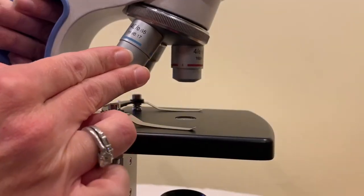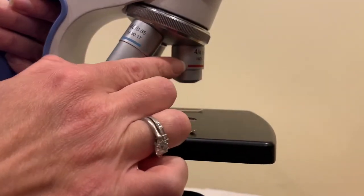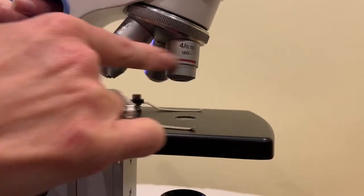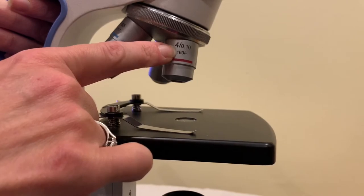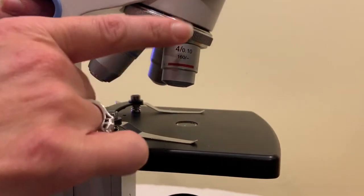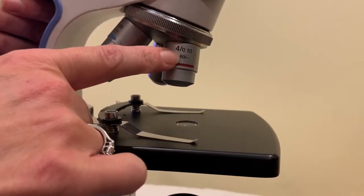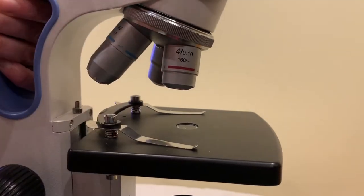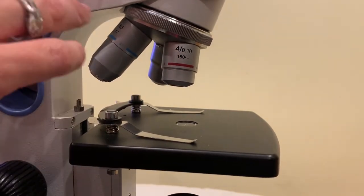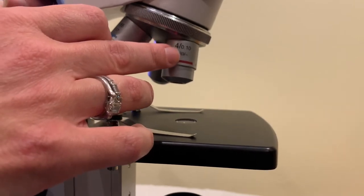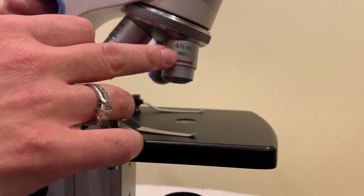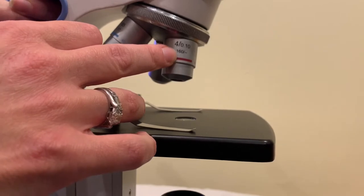We always start with the smallest objective lens pointing downwards. The smallest objective lens has a magnification of 4. So if we were to do 4x times 10x of the ocular lens that would give us a total magnification of 4 times 10 is 40. So 40x.